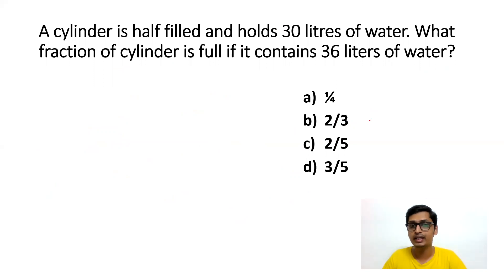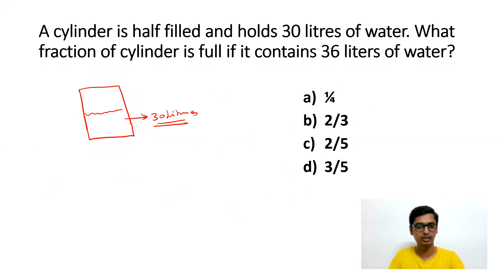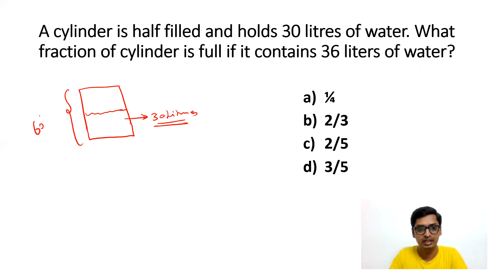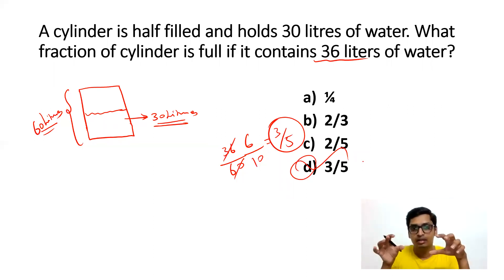Next question: A cylinder is half filled and holds 30 liters of water. What fraction of the cylinder is full if it contains 36 liters? When half filled it is 30 liters, so when fully filled it would be 60 liters. If 36 liters is filled out of 60, the fraction is 36/60, which simplifies to 3/5. So the cylinder is 3/5 filled when it contains 36 liters of water.